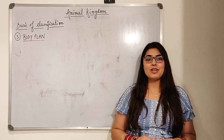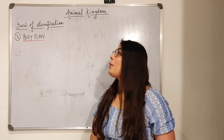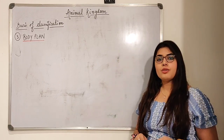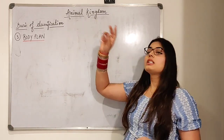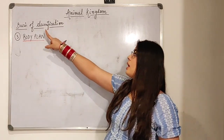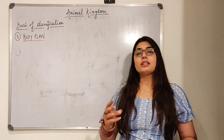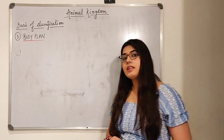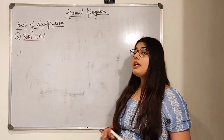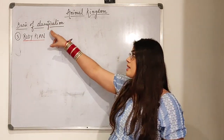Welcome back to the channel. In this video we will be moving forward with the third topic of basis of classification. We have made three videos so far on the animal kingdom — the first covering the introduction, and the second and third covering the first two points of basis of classification: level of organization and germ layers.